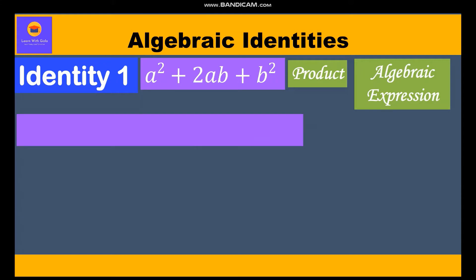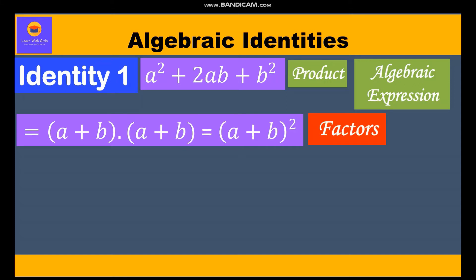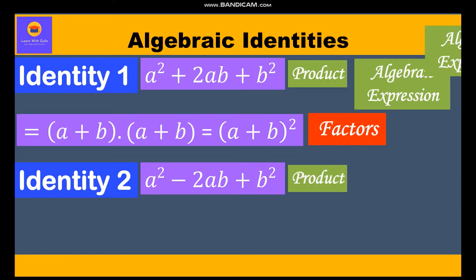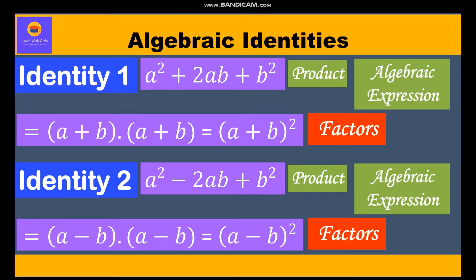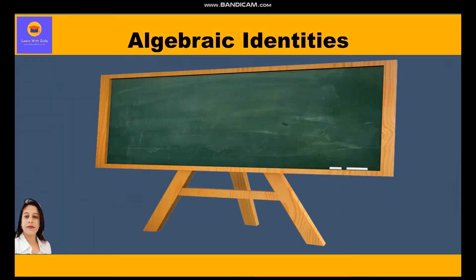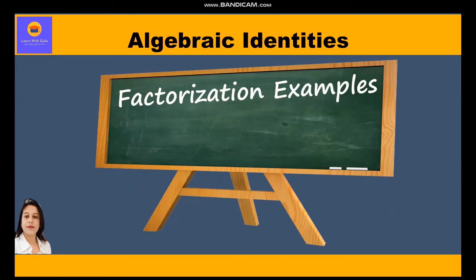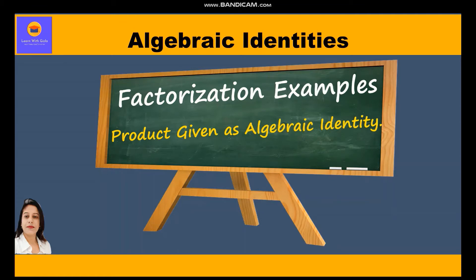In identity one, a² + 2ab + b² is the product, and it has two factors: (a + b)(a + b), which we can also write as (a + b)². Similarly, in identity two, a² - 2ab + b² is the product and has two factors: (a - b)(a - b), written as (a - b)². We shall now take a few questions where we are given a product in the form of algebraic identities and have to find its factors.